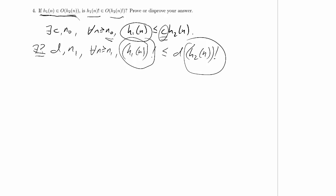So that kind of suggests to me that maybe this isn't true. So what I want to do is find an h1 that is in big O of h2 and show that h1 factorial is not in big O of h2 factorial. So I'm going to reach for the very simplest functions I can find. Things that come to mind are like n and 2n or n and n plus 1.